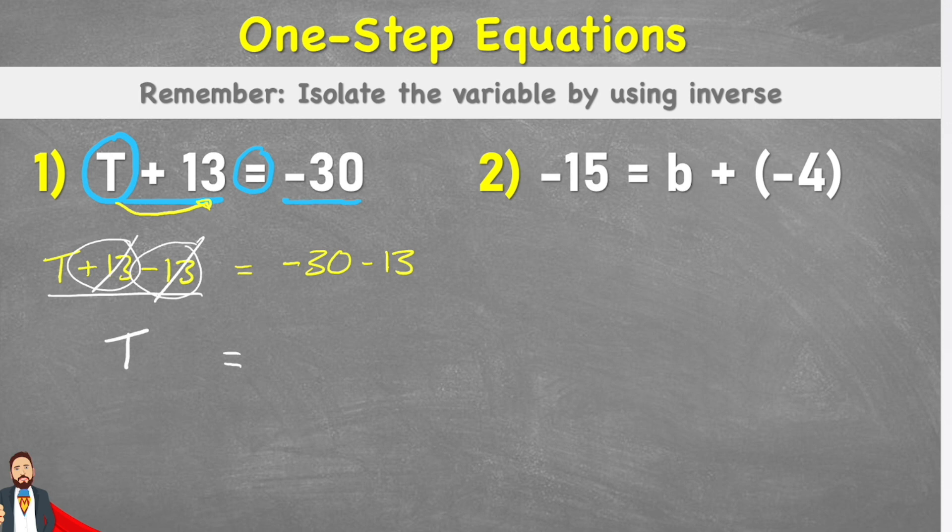Well, we have negative 30 and we're going even further down, getting even more of a negative. So we're going to be going further down the number line and we'll end up with negative 43. So in this case, T equals negative 43. Let's have a look with a second example.